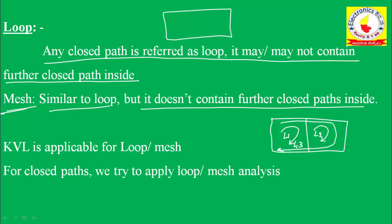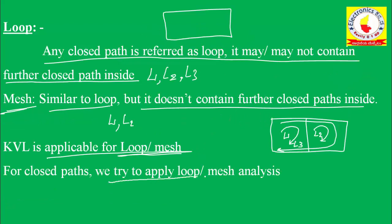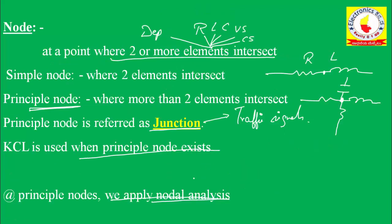L3 is not considered in mesh analysis because it contains further closed loops inside. In mesh analysis we have two loops, L1 and L2, while in loop analysis we have three loops: L1, L2, and L3. KVL is applicable for loop analysis or mesh analysis. KCL is applicable for nodal analysis. Whether you solve using loop/mesh analysis or nodal analysis, that decision is very important.